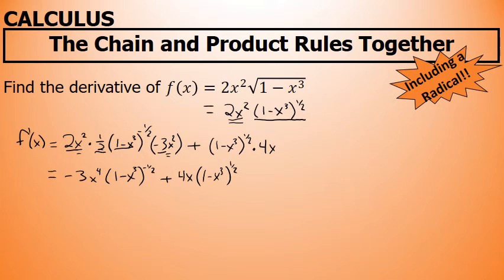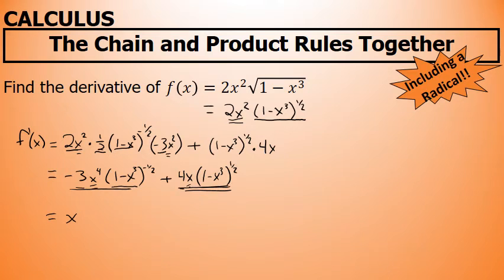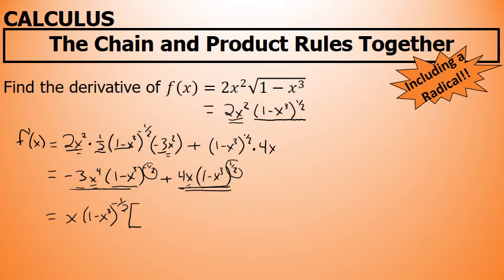Now I can factor. I can bring a common factor out to the front of the two terms in this derivative. The coefficients negative 3 and 4 have no common factor. The common factor between x⁴ and x is x. Note that (1 minus x³)^(-1/2) and (1 minus x³)^(1/2) share a common factor of (1 minus x³). When factoring out with powers involved, you take the lower of the two powers, which is negative one-half, since negative one-half is less than positive one-half.